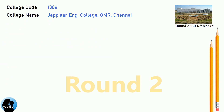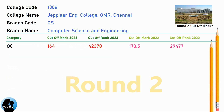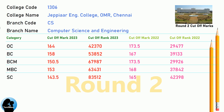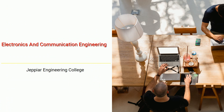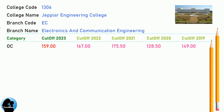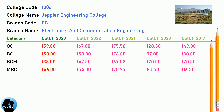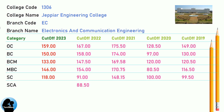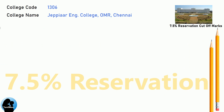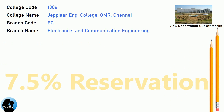DNA Cut-off for JPR Engineering College in Computer Science and Engineering. DNA Cut-off for JPR Engineering College in Electronics and Communication Engineering. DNA 7.5 Reservation Cut-off for JPR Engineering College in Electronics and Communication Engineering.